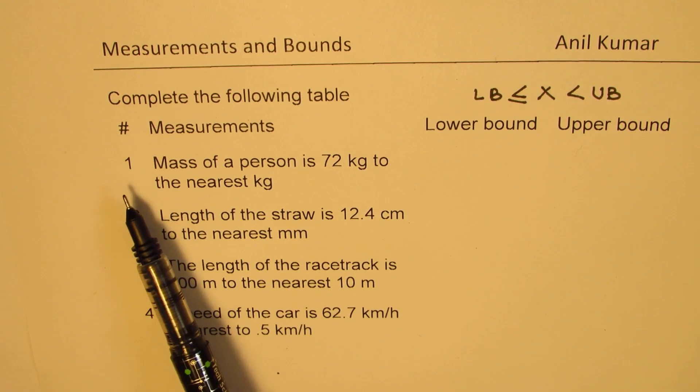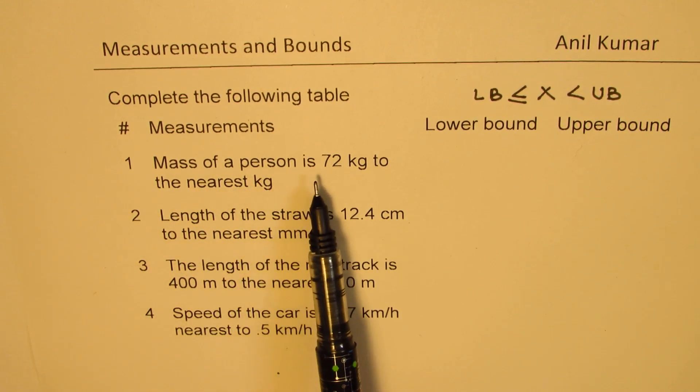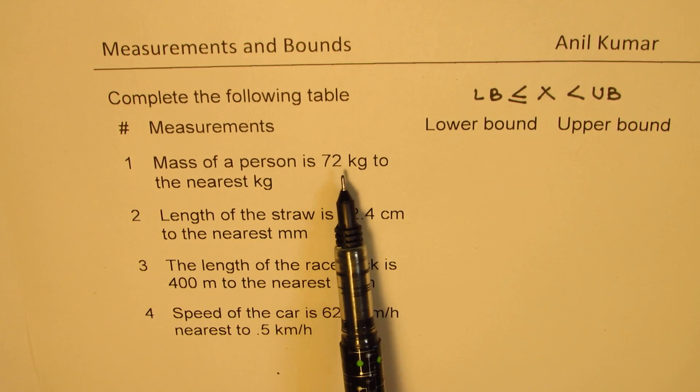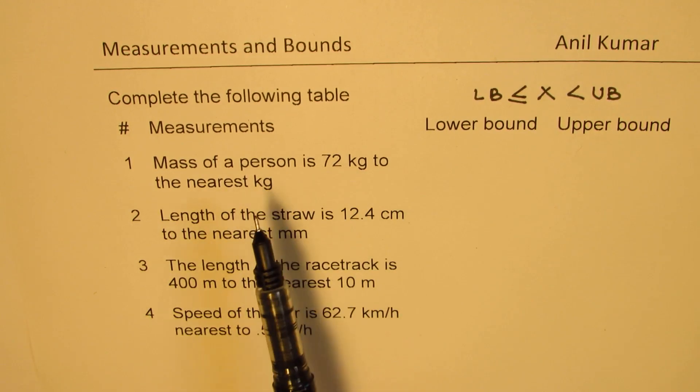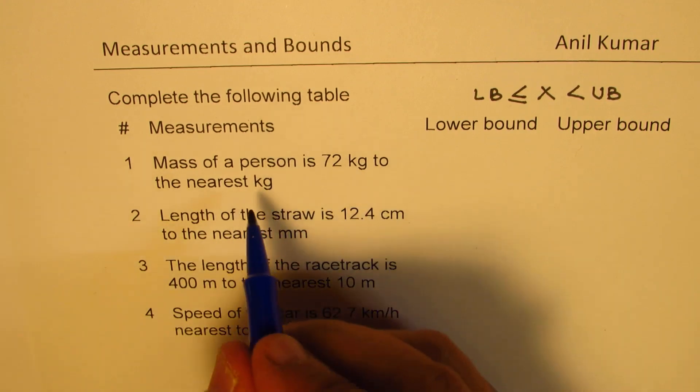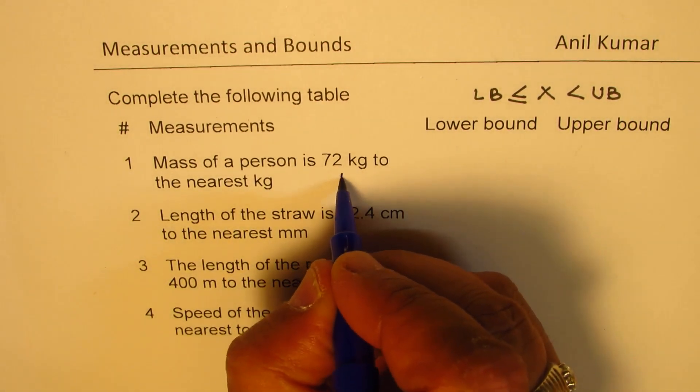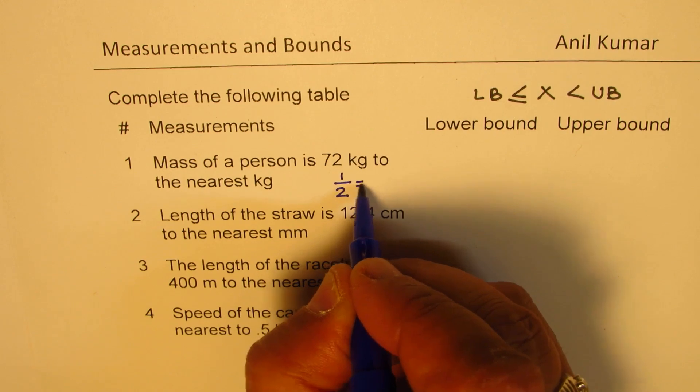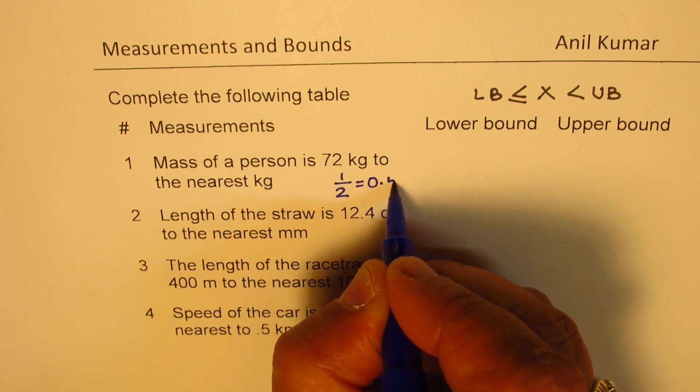Now, question number one. Mass of a person is 72 kg to the nearest kg. So, to the nearest kg means 1 kg, right? So we do half of that. Half is 0.5.